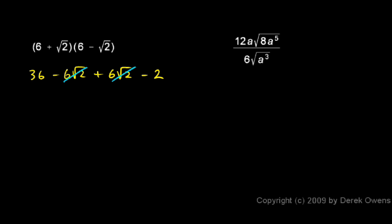These terms cancel out. Plus 6√2 and minus 6√2 cancel out, and we're just left with 36 minus 2, which is 34.